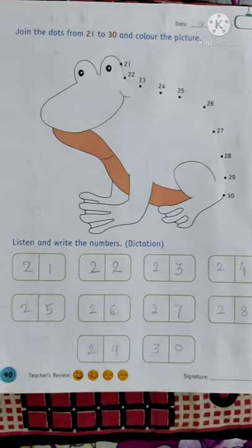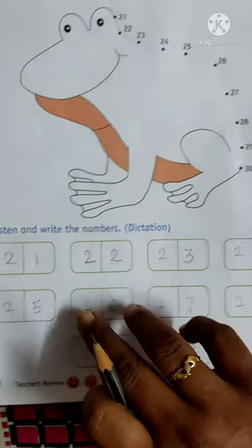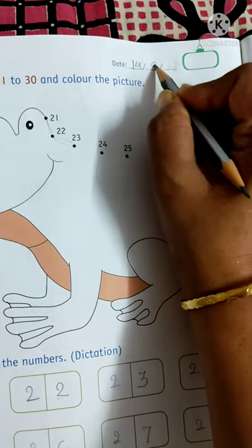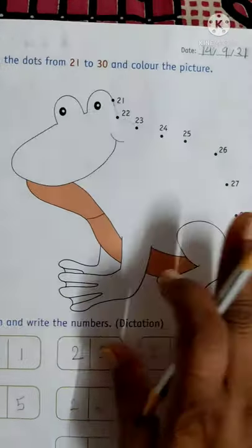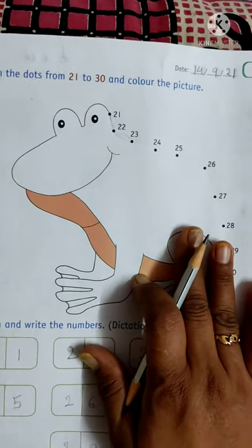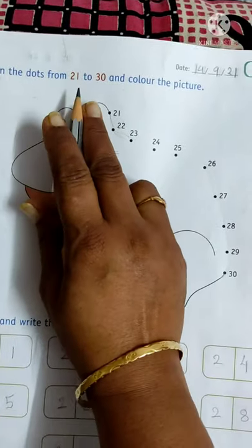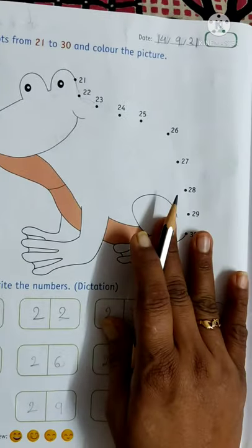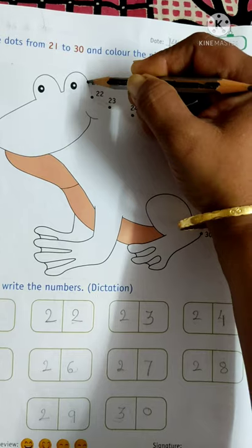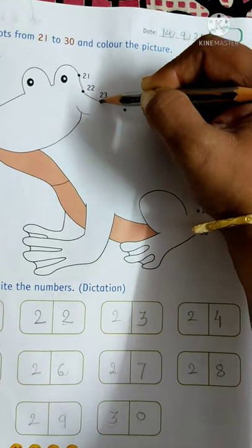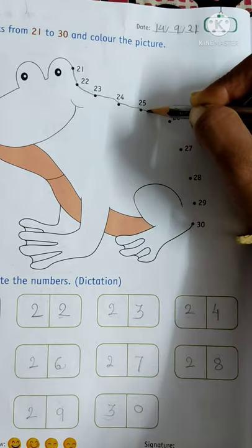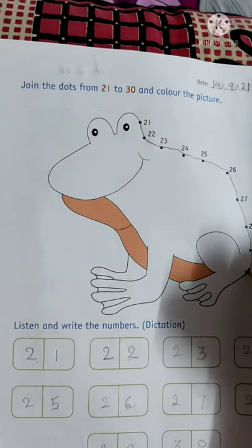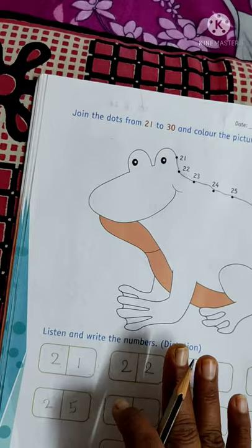Hello kids, good morning Jay Swami Narayan. Math book, page number 40. Today's date is 14th September 21. Today we have a little fun. Just join the dots from 21 to 30. Start joining the dots with me: 21, 22, 23, 24, 25, 26, 27, 28, 29, 30.